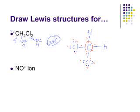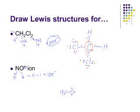Now let's look at the NO⁺ ion. Nitrogen contributes 5 valence electrons and oxygen contributes 6, giving 11 normally. But since this is a +1 ion, we've lost one electron, leaving us 10 electrons to work with. Placing the two atoms side by side and trying single bonds, we count 10 electrons placed, but nitrogen only has 4 electrons around it — not an octet. So a single bond structure is not acceptable.